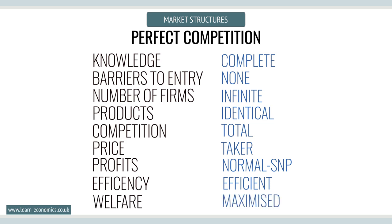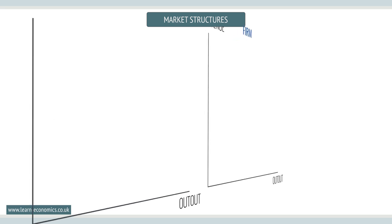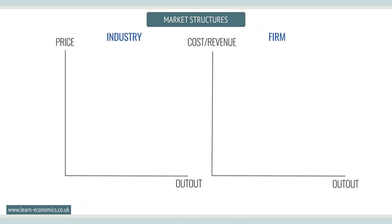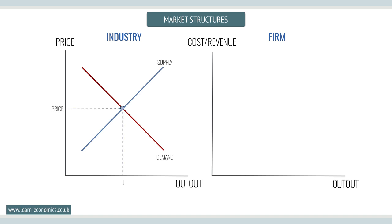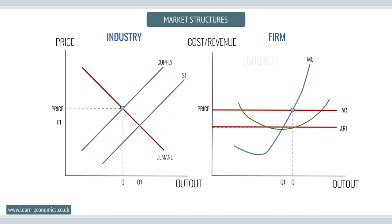Firms operating under conditions of perfect competition take their price from the whole market or industry. In the short run, supernormal profits are possible. However, supernormal profits encourage new entrants, shifting industry supply and pushing down price. Eventually, supernormal profits are eroded.